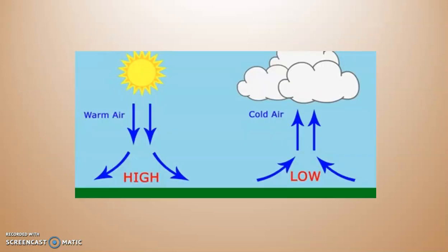Let's look again at the movement on this diagram. Notice on the left hand side, with high pressure, the air is descending and diverging. Then notice on the right hand side where you see the low — which means low pressure — the air is converging and it's rising, and at the same time as it rises it tends to make clouds.